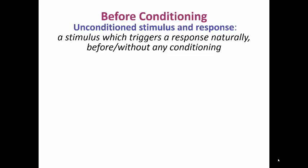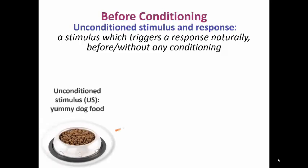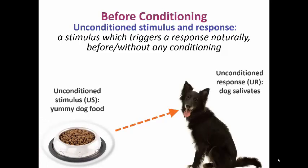Before conditioning, you have the unconditioned stimulus and response. An unconditioned stimulus is a stimulus which triggers a response naturally before any conditioning. In this case, the unconditioned stimulus is the presentation of food and the unconditioned response is the dog salivating. For example, if you're a male, seeing an attractive female would be the unconditioned stimulus, and then the unconditioned response would be feeling aroused. These are things we can't really control — these are our biological urges.